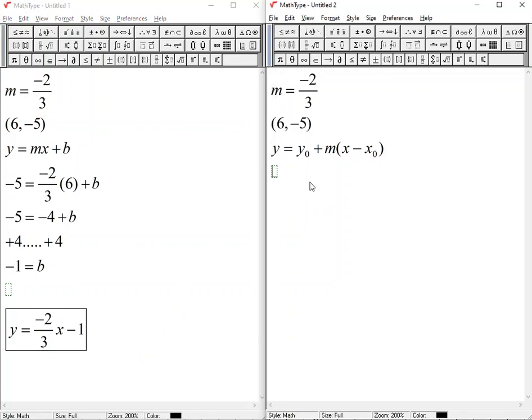I'm going to do the same thing over on this side using point slope form instead. So in this form x and y stay letters and then the coordinates go in for x naught and y naught. So y naught comes first plus m. My m number is negative, so we're going to have a minus 2 thirds for our m right here, x minus our x coordinate which is 6.